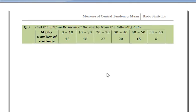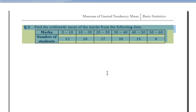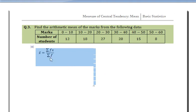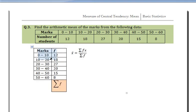Example 3: Find the arithmetic mean of marks from the following data, where marks are given in class form — for example, 0 to 10 has 12 students, 10 to 20 has 18 students, and so on. This is grouped frequency distribution. We solve using x-bar equals summation fx upon summation f. Summation f equals 100.